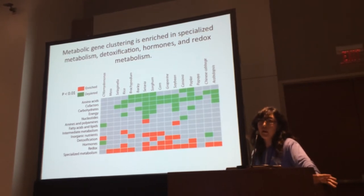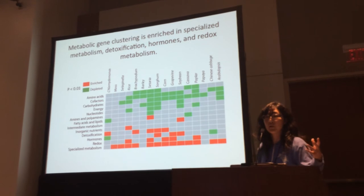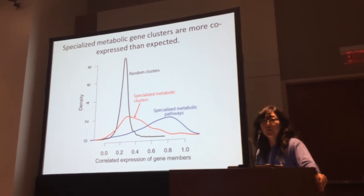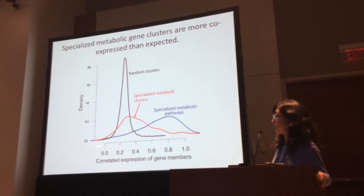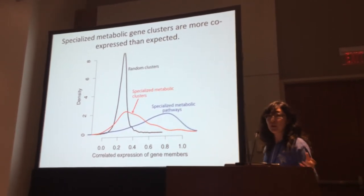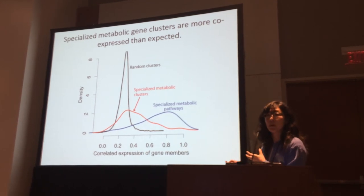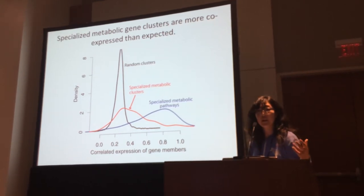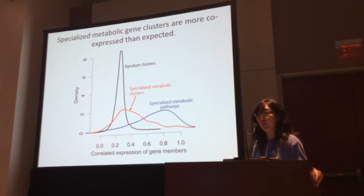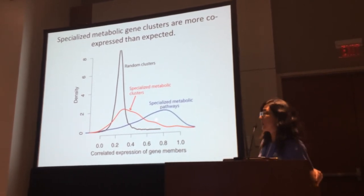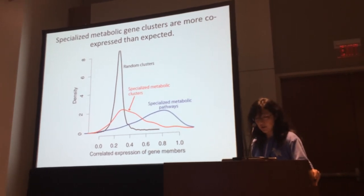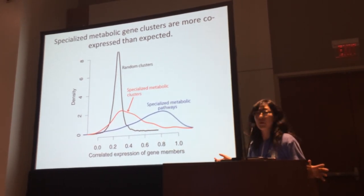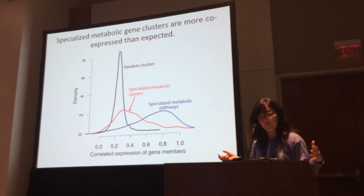One thing we asked was whether these metabolic gene clusters could represent real pathways by testing whether they are co-expressed. Known specialized metabolic genes within the same pathway are very highly co-expressed compared to randomly selected cluster genes. Importantly, gene clusters enriched in specialized metabolic genes are also quite co-expressed — much more than random clusters, though not as highly co-expressed as known specialized metabolic genes. It remains to be seen how many of these metabolic clusters are real pathways and what their origin and function are.